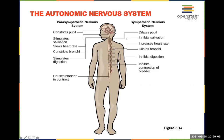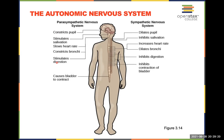The autonomic nervous system chart shows what each division does. Under parasympathetic (housekeeping): pupils constrict normally, digestion is stimulated starting with salivation, heart rate returns to resting, bronchi constrict, and bladder constricts to create the urge to urinate. These are normal day-to-day functions.